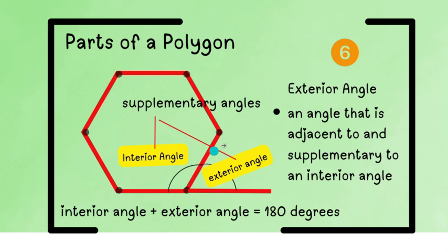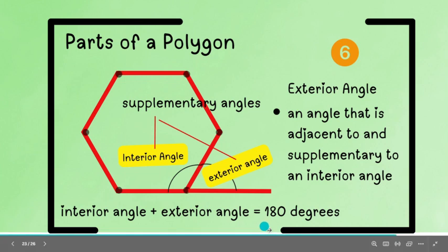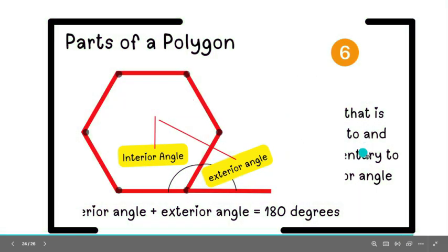Now, just imagine this line. So, ang nag-cut lang sa kanila itong line. So, this is an exterior angle because it is outside of the polygon. And, this is interior angle because this is inside the polygon. Now, if you add these two adjacent angles, they will form 180 degrees. And, that's why we call them supplementary angles.